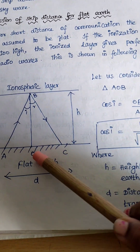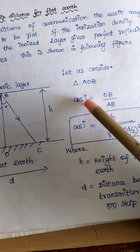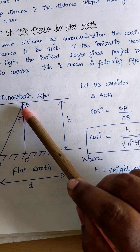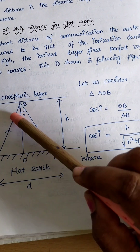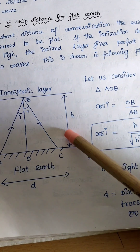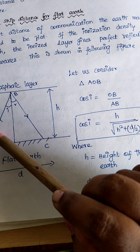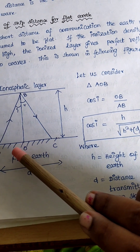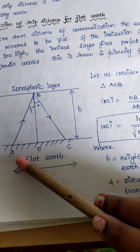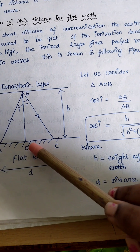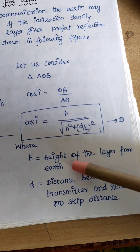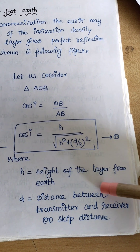Consider triangle AOB. In triangle AOB, the cosine formula is cos(i) = OB / AB, which is adjacent over hypotenuse. So cos(i) = H divided by AB. AB is equal to the square root of H squared plus (D/2) squared. Therefore cos(i) = H divided by the square root of H squared plus D squared over 4, where H is the height of the layer and D is the skip distance between the transmitter and the receiver.